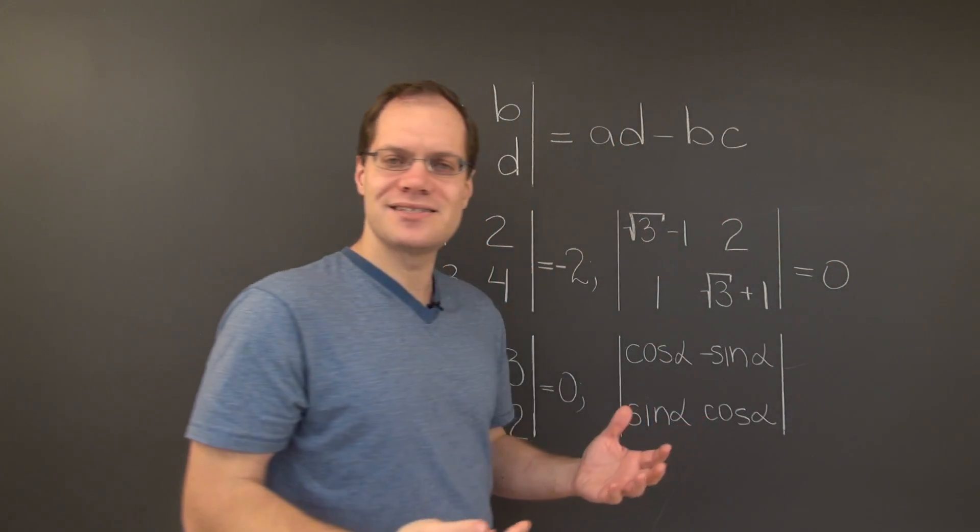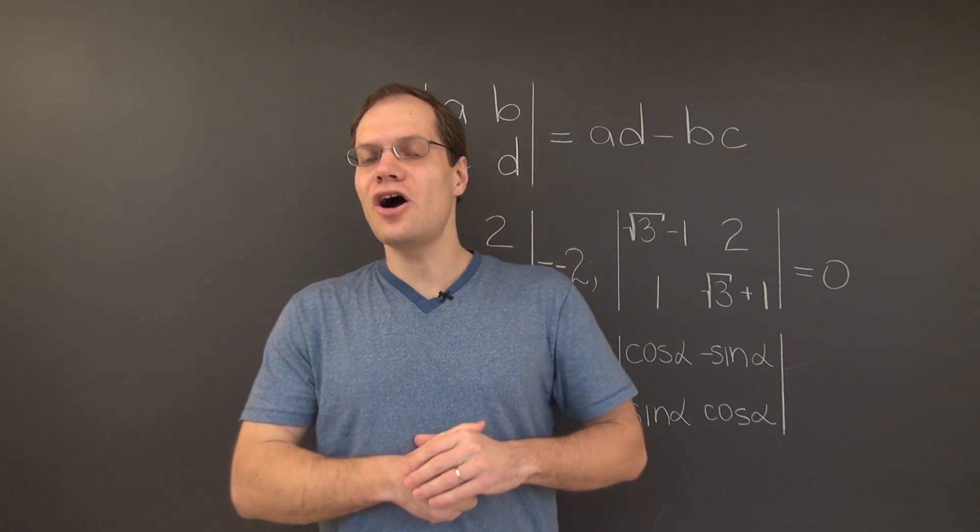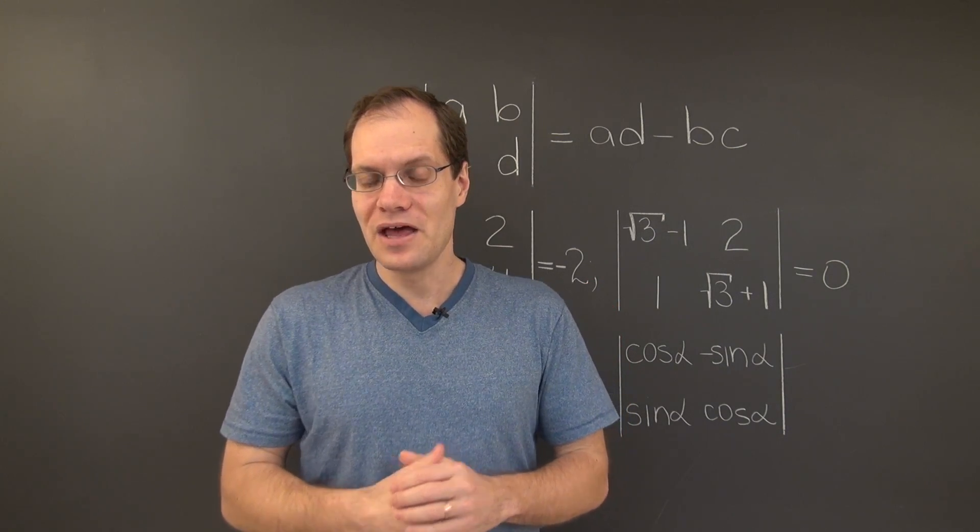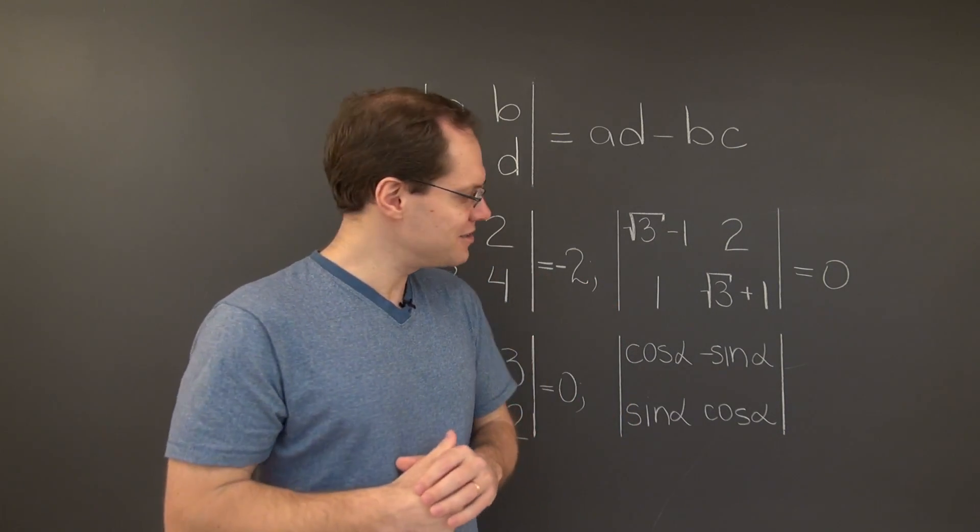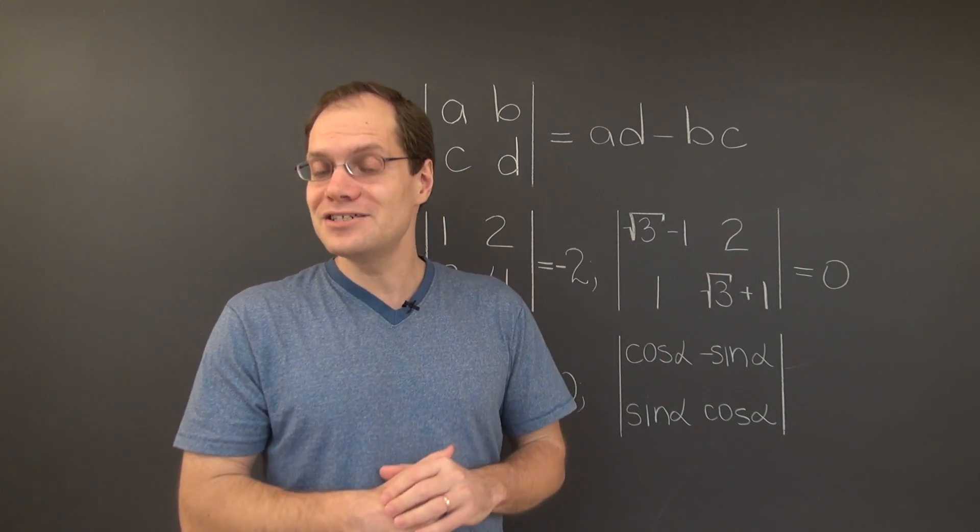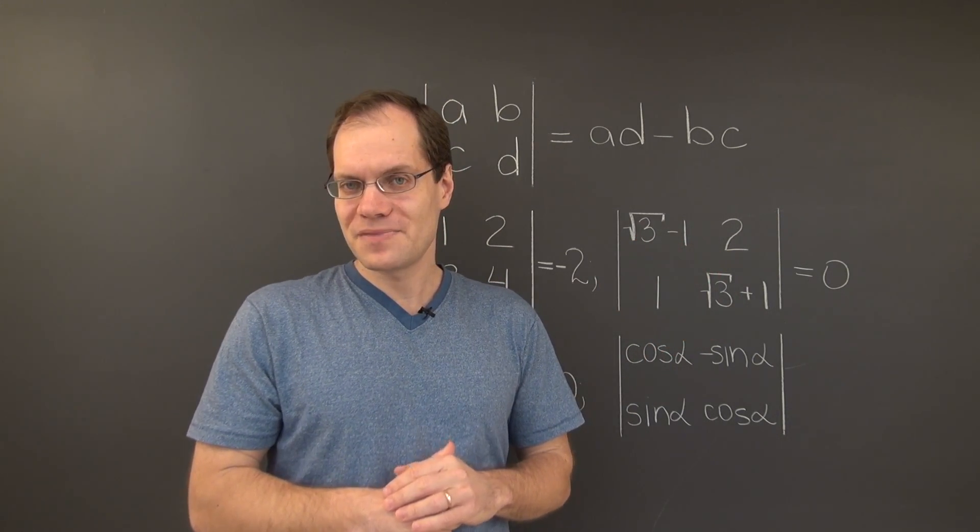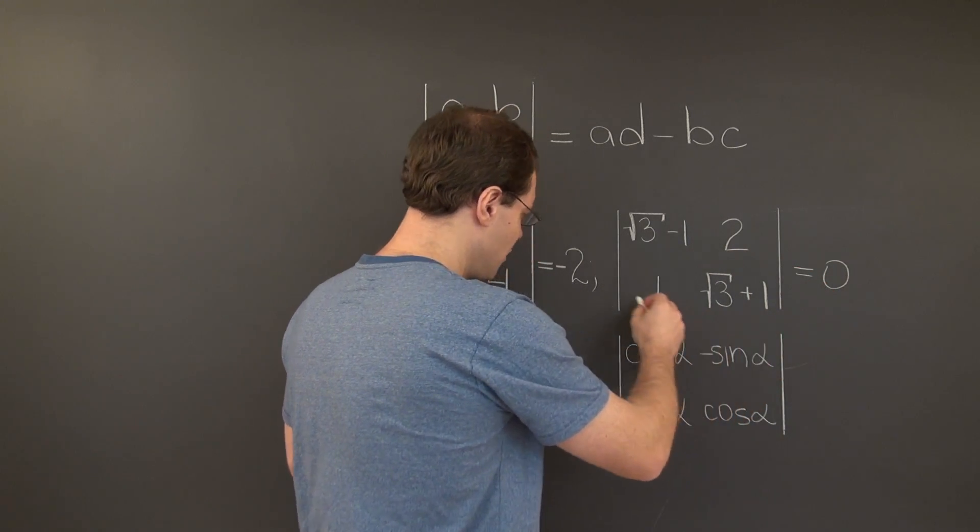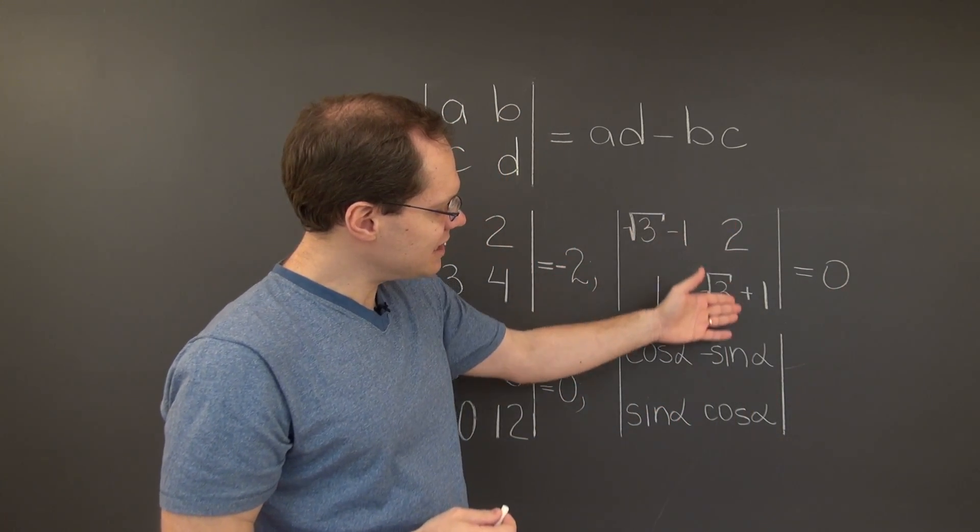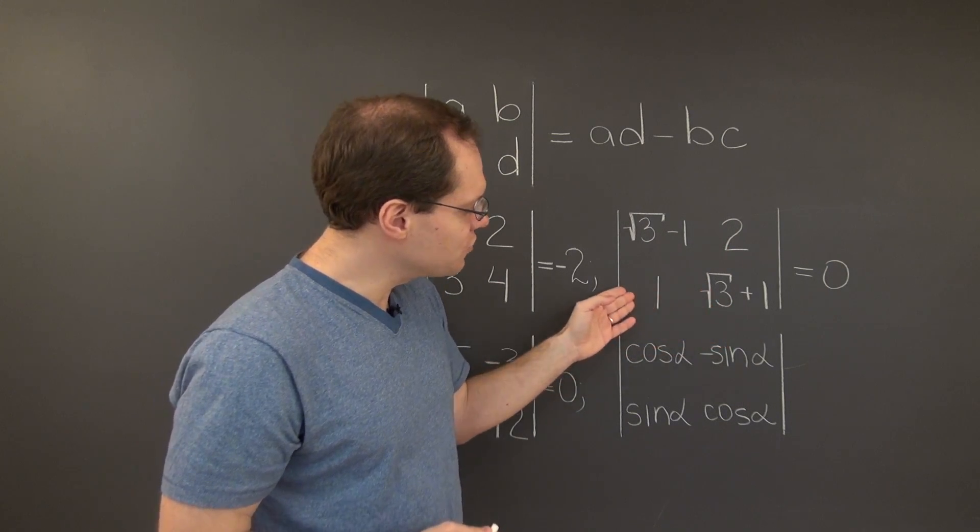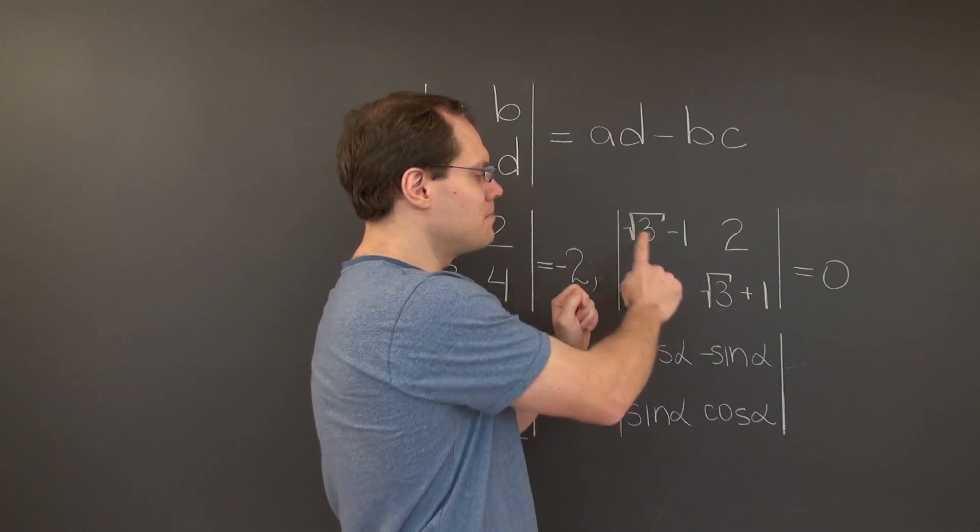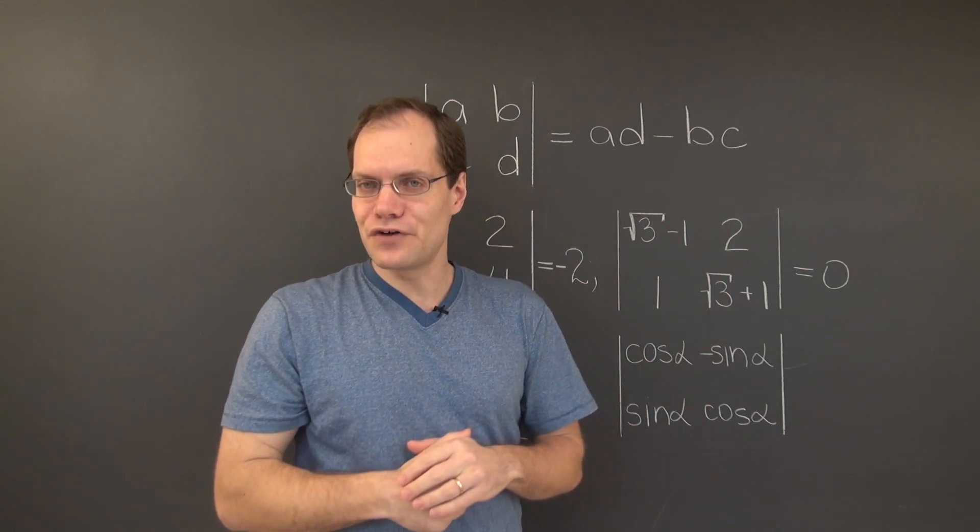The determinant tells us that the columns of this matrix are linearly dependent, something we would not have guessed in the beginning. Now that we know they're linearly dependent, we have to identify the relationship. By looking at the second row, the only relationship can be that the second column is square root of 3 plus 1 of the first column.